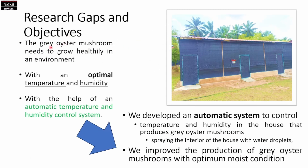As discussed, gray oyster mushrooms need to grow healthy in an optimal environment to achieve quality products. Therefore, we require optimal temperature and humidity, and so we need an automatic temperature and humidity control system. In this project, we propose two research objectives: first, to develop an automatic system to control temperature and humidity intelligently; and second, to improve the production of gray oyster mushrooms with optimal moist conditions.